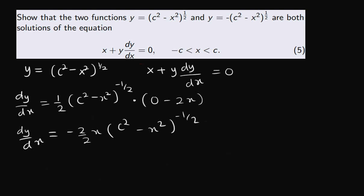These two cancel out, so we have dy over dx equal to minus x multiplying c squared minus x squared to the power of minus half.